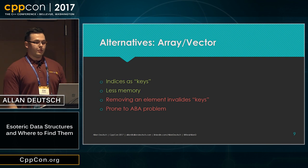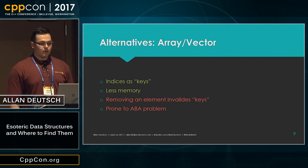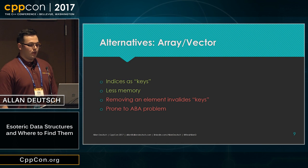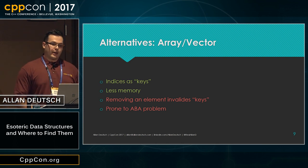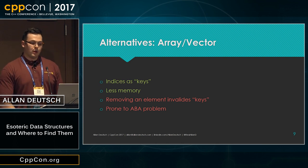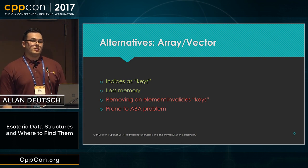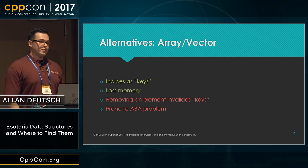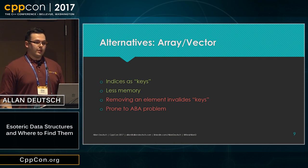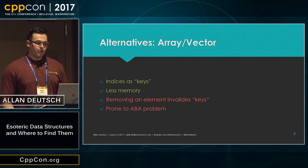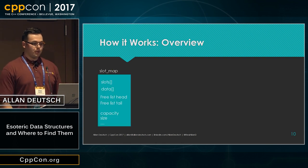Another alternative would be using an array or a vector — you can use the indices kind of like keys. Since it's all packed together, it's going to use a bit less memory than a slot map because it doesn't have some of the overhead to make the guarantees. But the downside is that when you want to remove something, that's going to either invalidate everything after it, or the last element might need to be shifted into that spot. Arrays are also prone to the ABA problem.